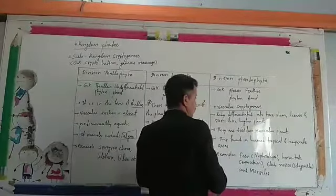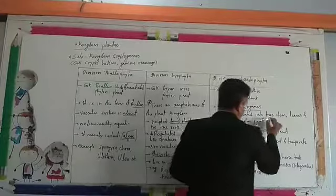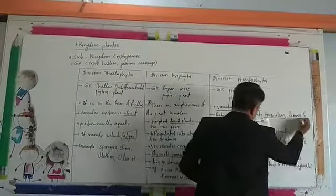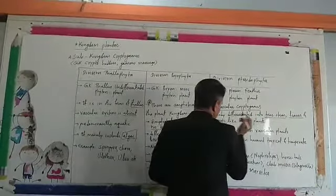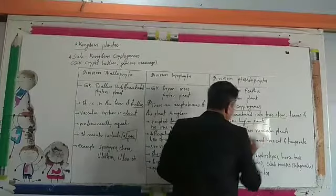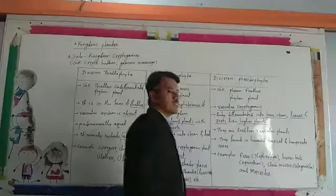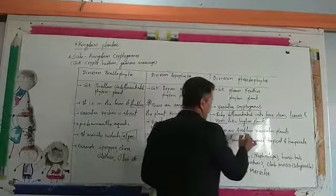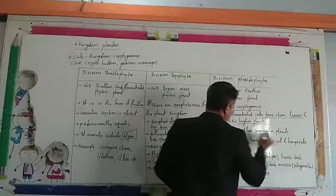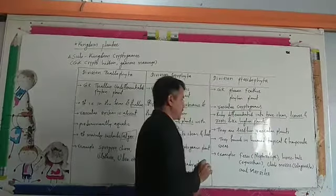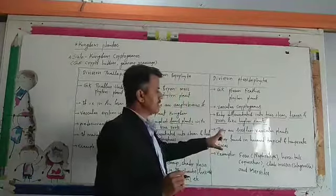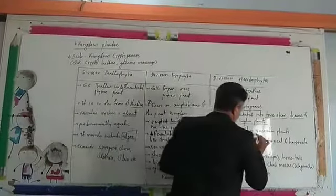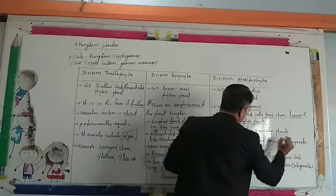The body is differentiated: stem is present, leaves are present, and roots are also present, like the higher plants. However, they are seedless vascular plants — they do not possess seeds. That is why they are called seedless vascular plants.